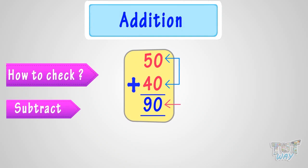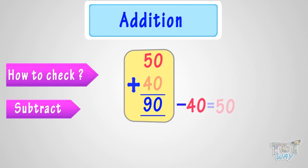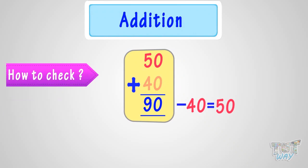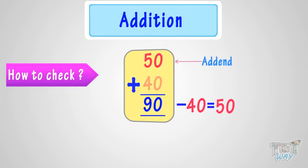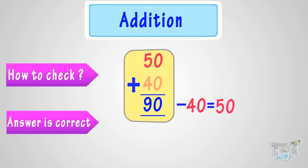Let's see: 90 minus 40 equals 50. Subtracting one of the addends from the sum, we get the other addend. So it proves our answer is correct.